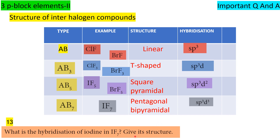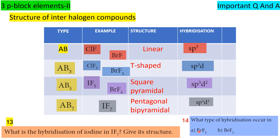What is the hybridization of IF₇? Give its structure. IF₇ hybridization is SP3D3, and its structure is pentagonal bipyramidal — very easy book-back question. BrF₅ is SP3D2, BrF₃ is SP3D. These are the hybridizations for AB₃, AB₅, and AB₇ type interhalogen compounds.